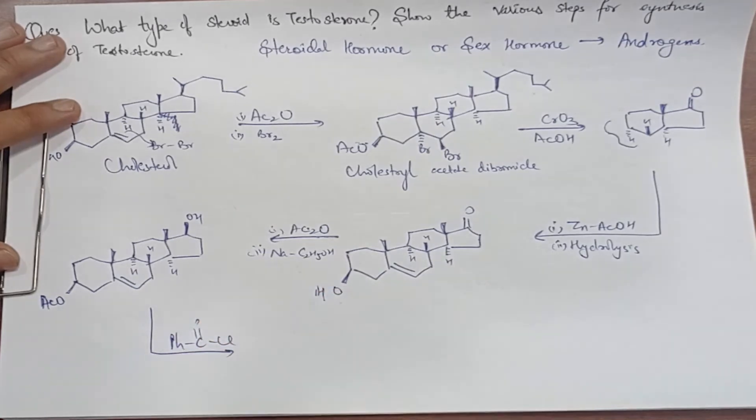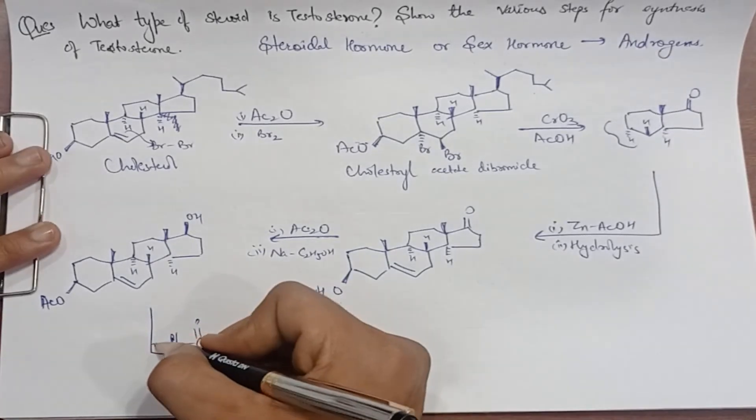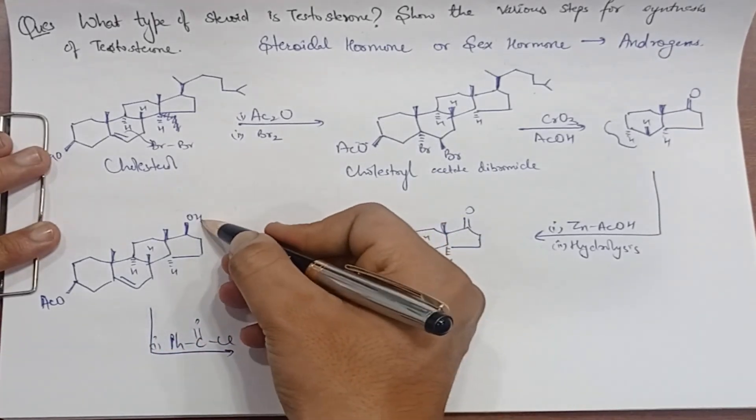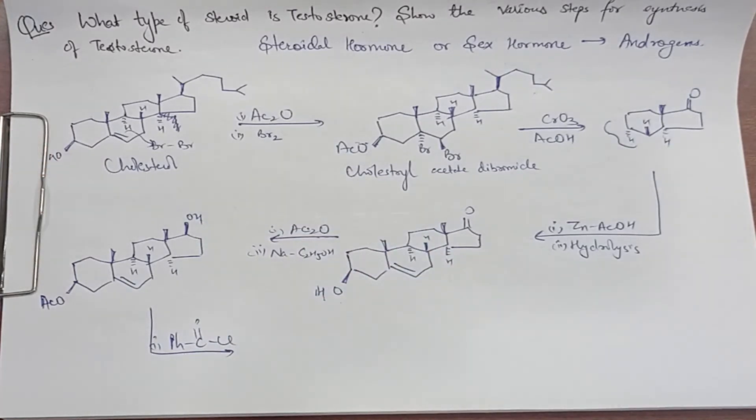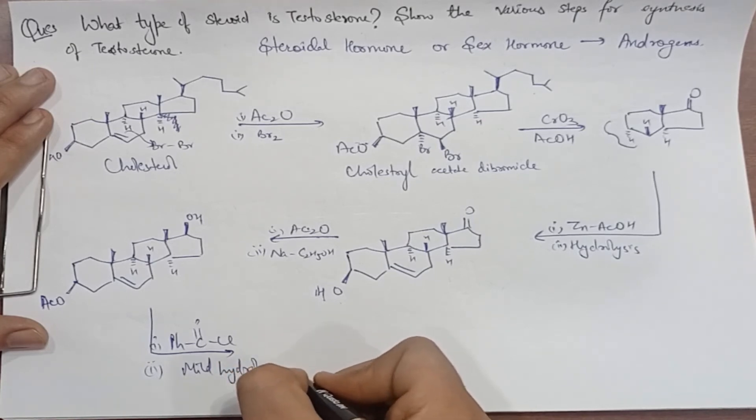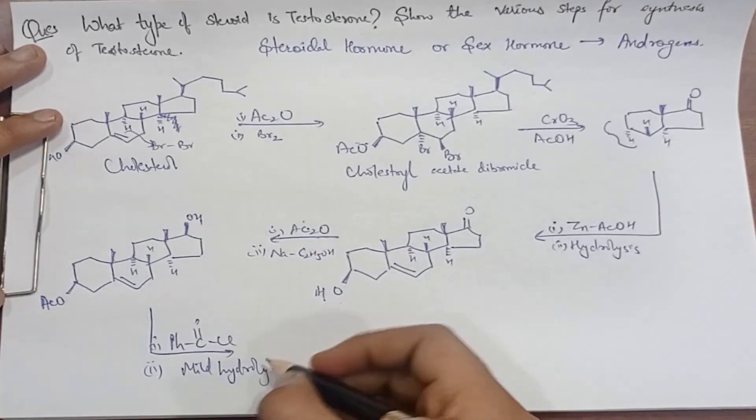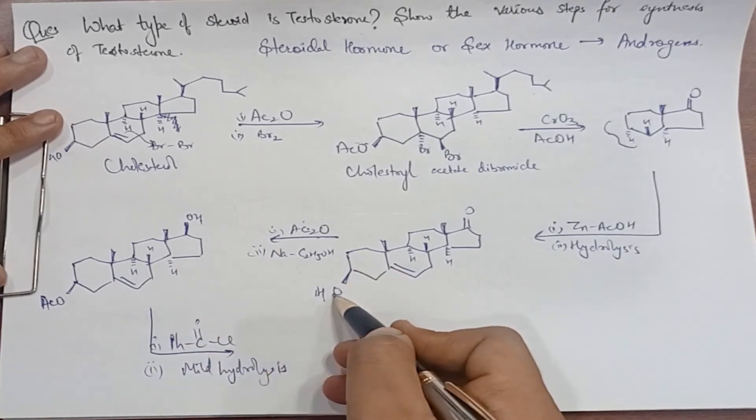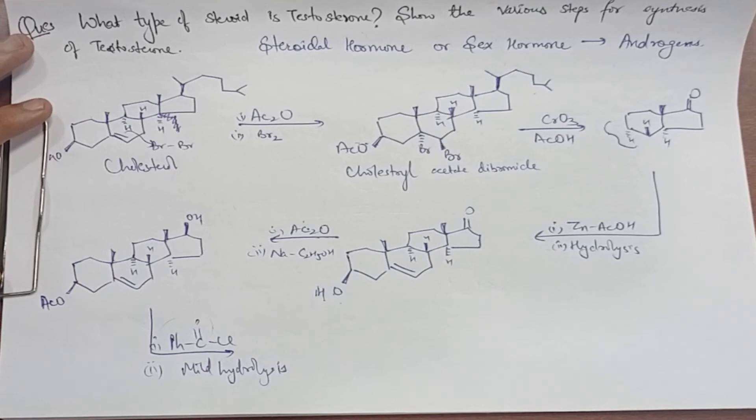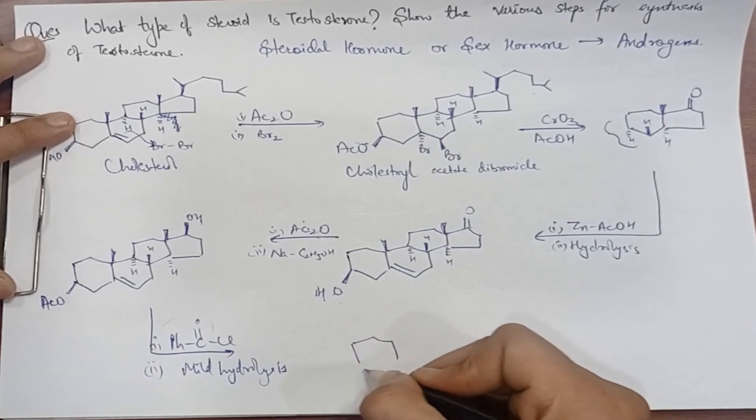Now what do we have to add? Phenyl carbonyl, CO-Ph, and second we do mild hydrolysis. Note here: we had to add acetic anhydride for protection of the OH groups. Now we add Ph-CO. Here we have the structure with OH groups.